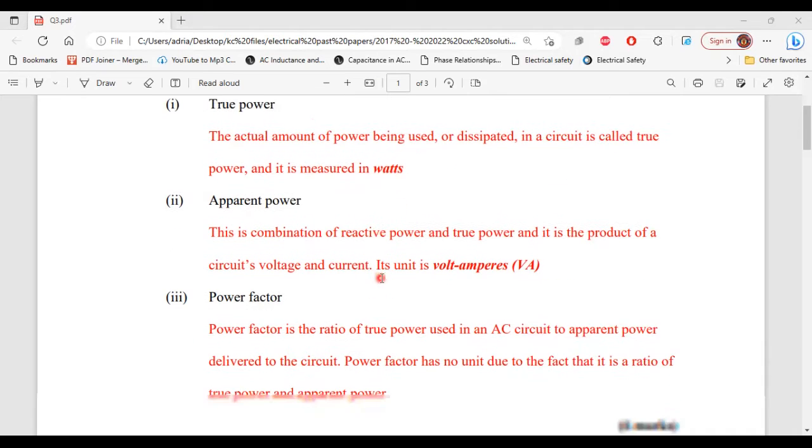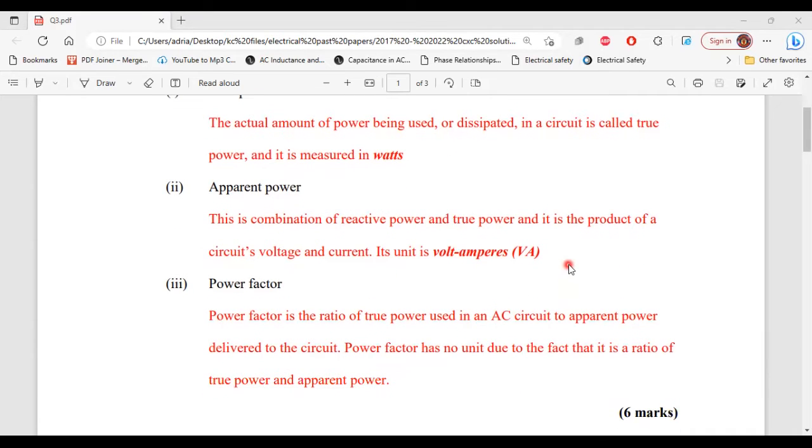Part three, power factor. The power factor is a ratio of true power used in an AC circuit to apparent power delivered to the circuit. Power factor has no unit due to the fact that it is a ratio of true power and apparent power. All right, so that's it for part A.